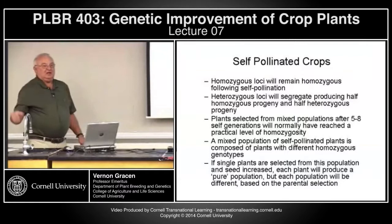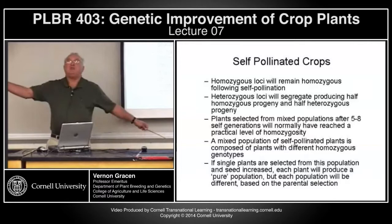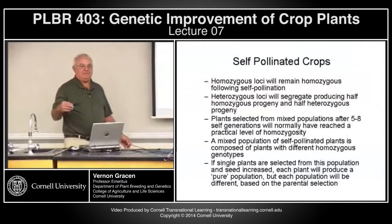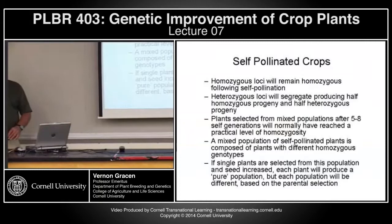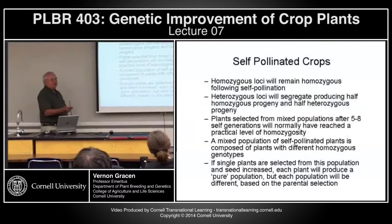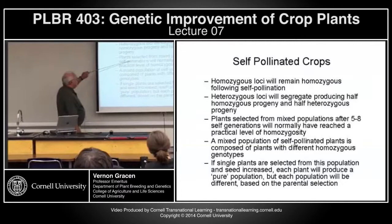In self-pollinated crops, a homozygous locus will remain homozygous forever, barring mutation at a rate of one in a million or one in five million. Heterozygous loci will segregate each generation, producing half heterozygous and half homozygous progeny — so every time you self, you lose heterozygous individuals. If you select plants from a mixed population, after five to eight self-generations they will normally reach a practical level of homozygosity.